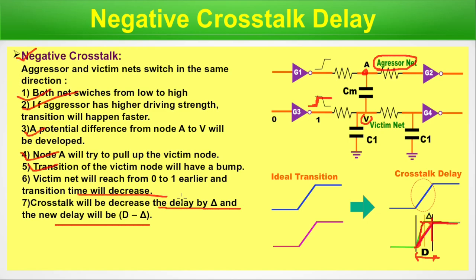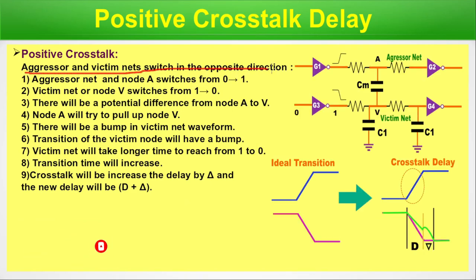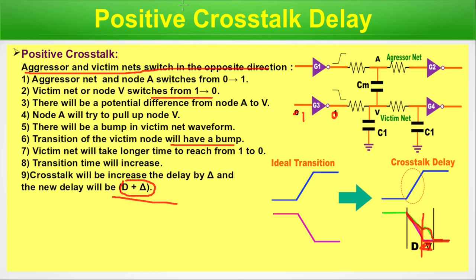Positive crosstalk delay: aggressor and victim net switch in opposite directions — aggressor switches from 0 to 1 while victim switches from 1 to 0. Node A tries to pull up node V. Since the victim is transitioning from 1 to 0, node A opposes this transition, creating a bump. The victim net reaches 0 a little later than it naturally would. Delta time is added to the delay, making the new delay D plus delta. This is positive crosstalk — it increases the delay.